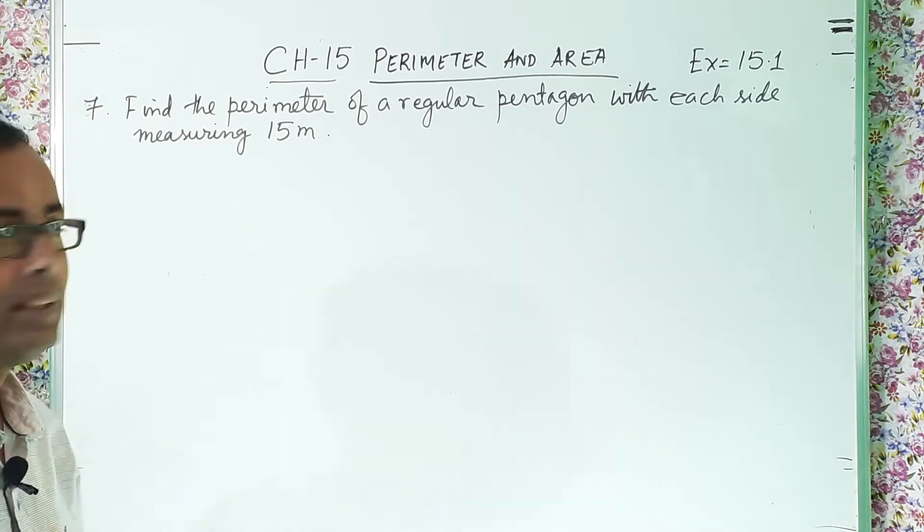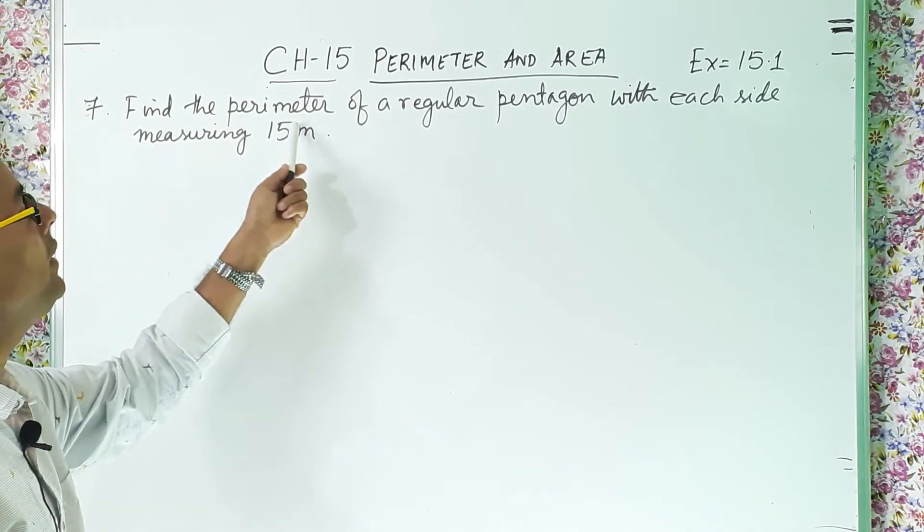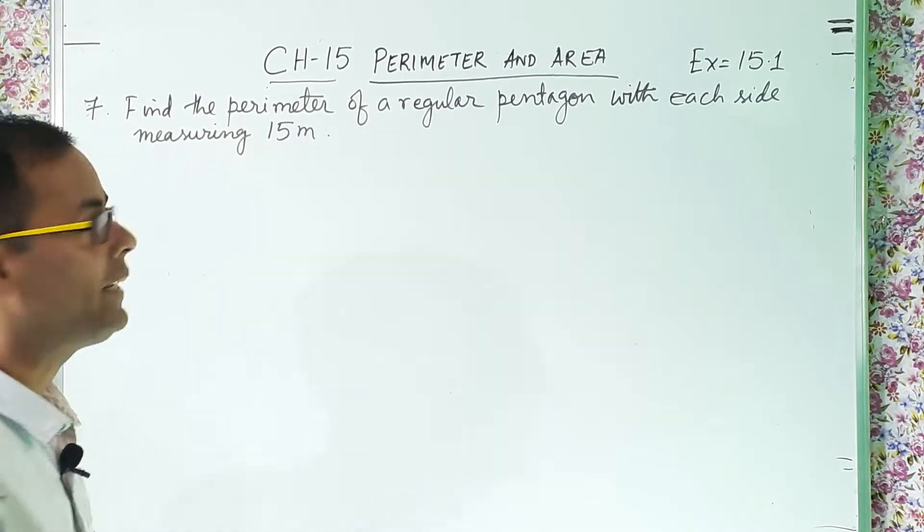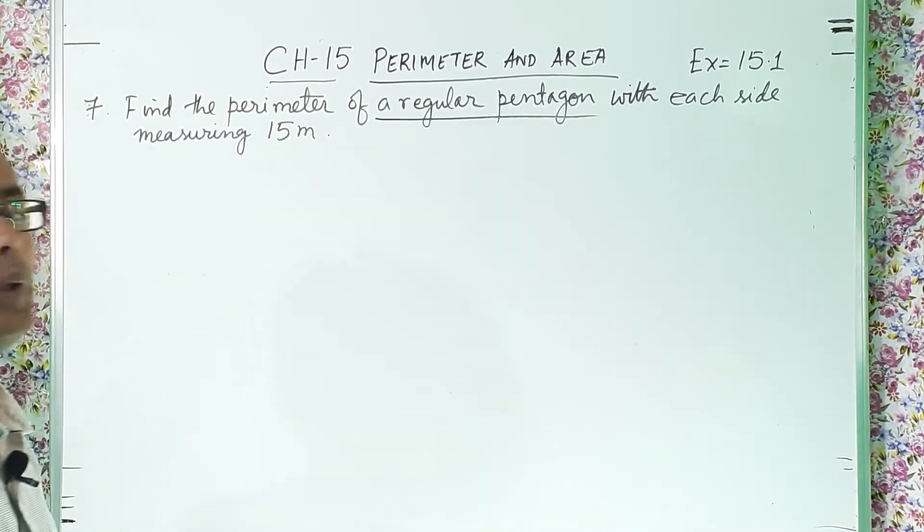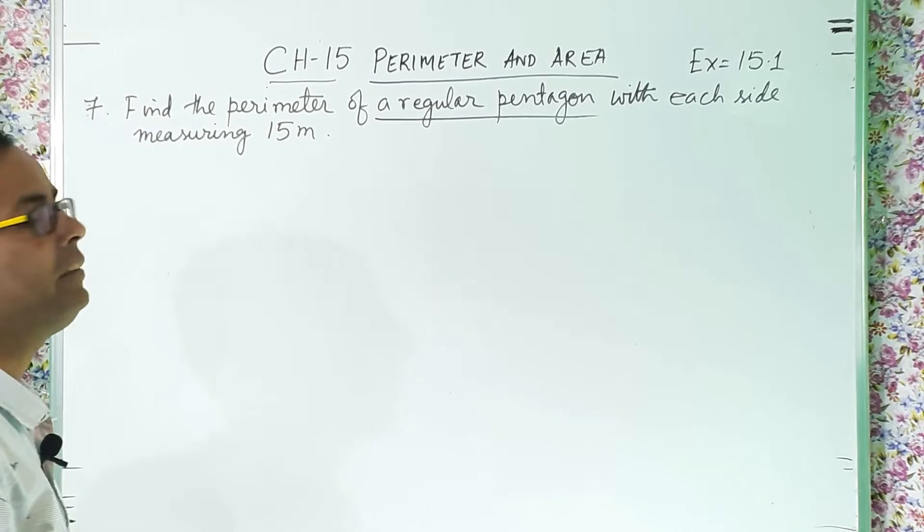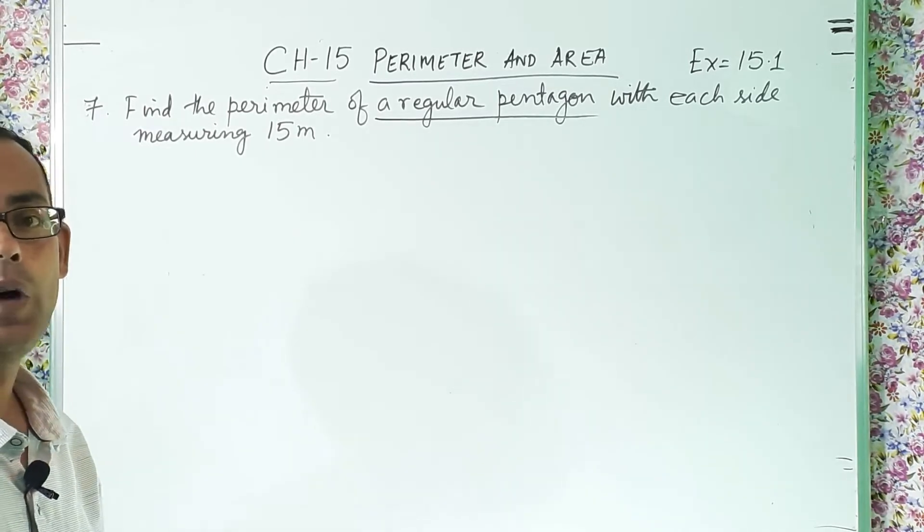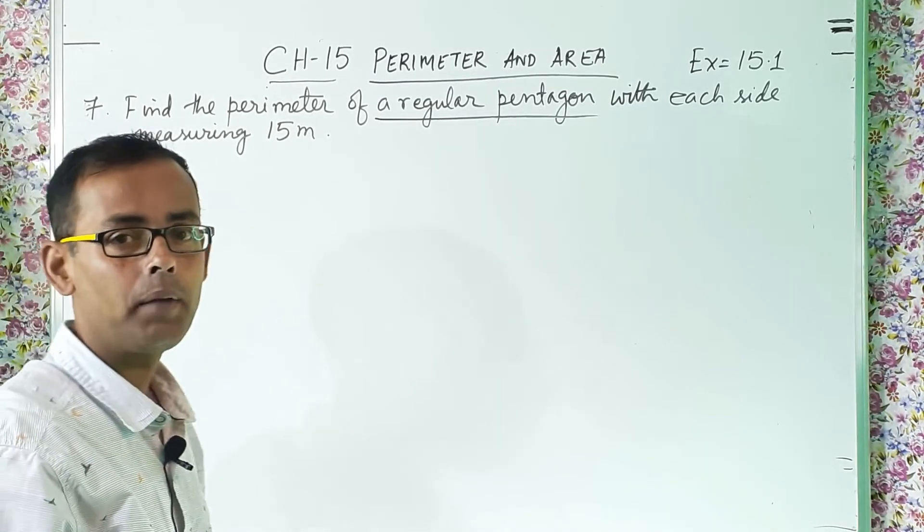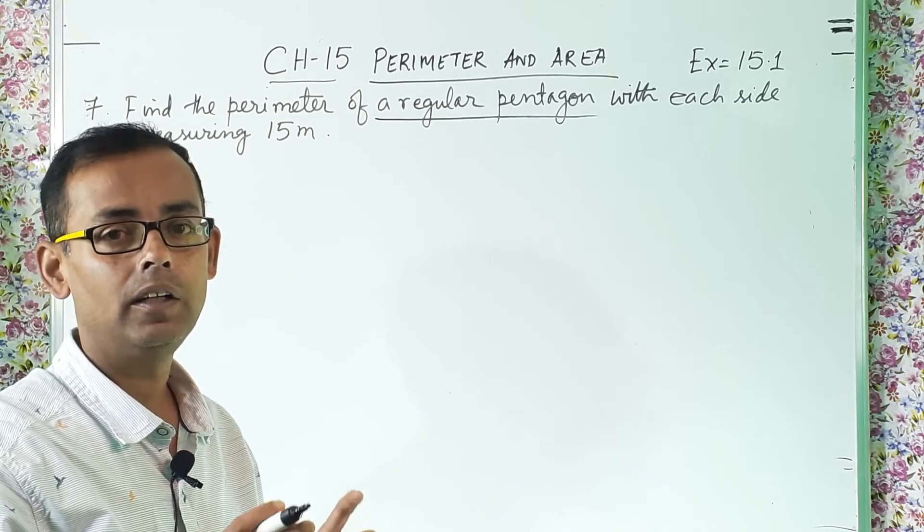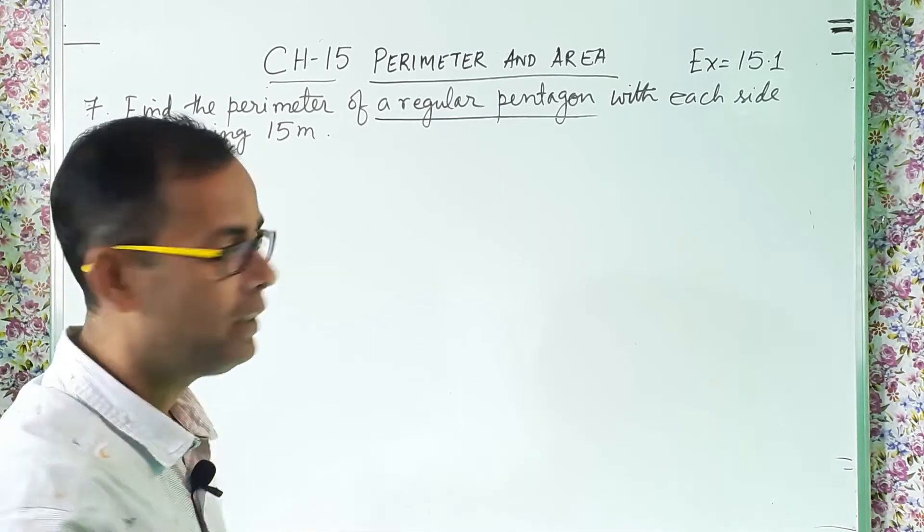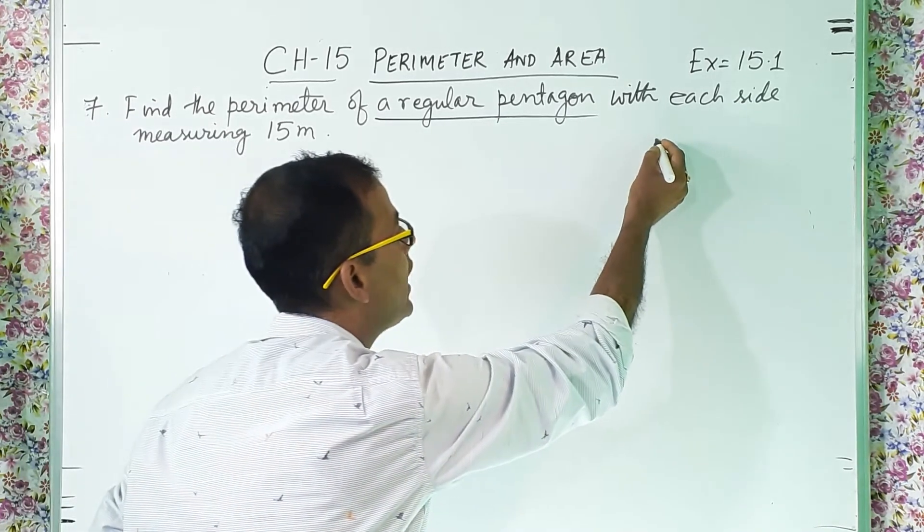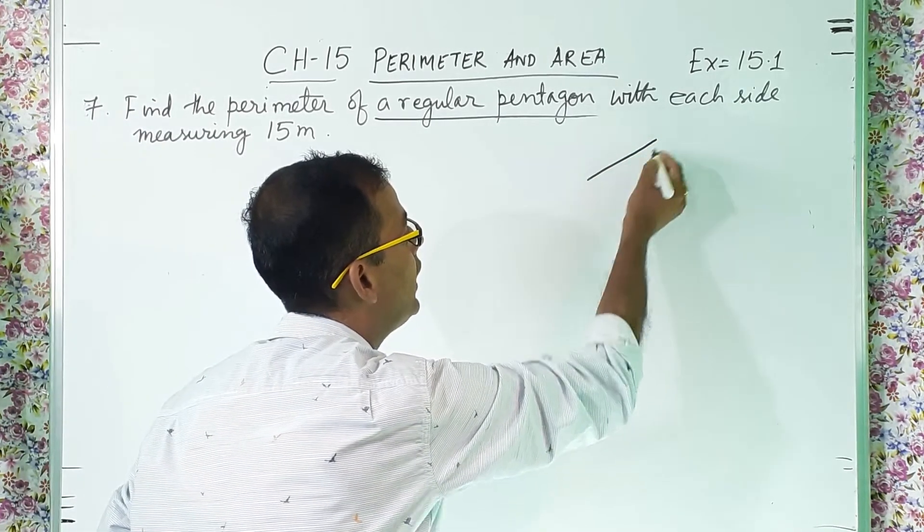Now let us come back to question number 7. Let us see what is there. Find the perimeter of a regular pentagon. So they are telling regular pentagon, with each side measuring 15 meter. So one regular pentagon is there. Pentagon means a figure bounded having 5 sides and 5 sides are equal.